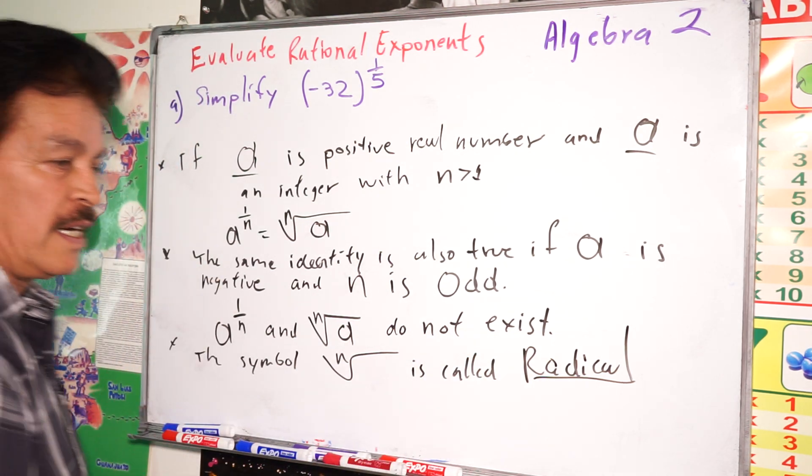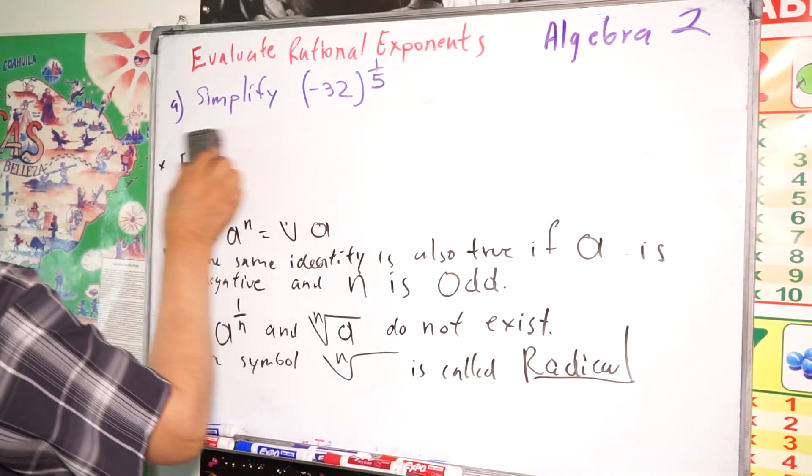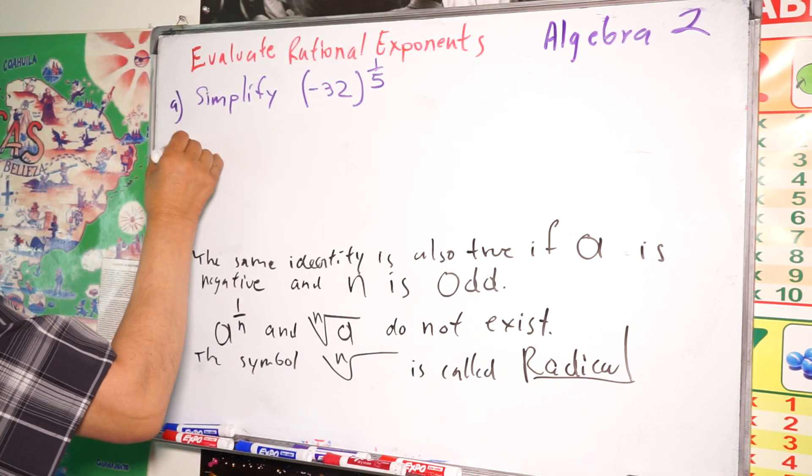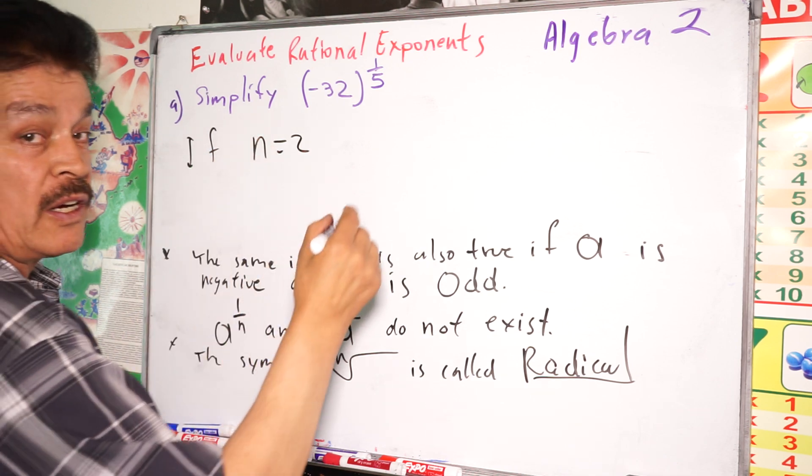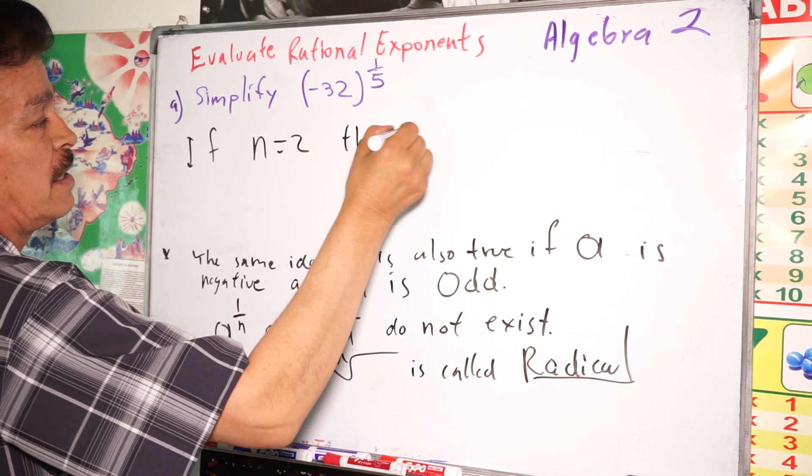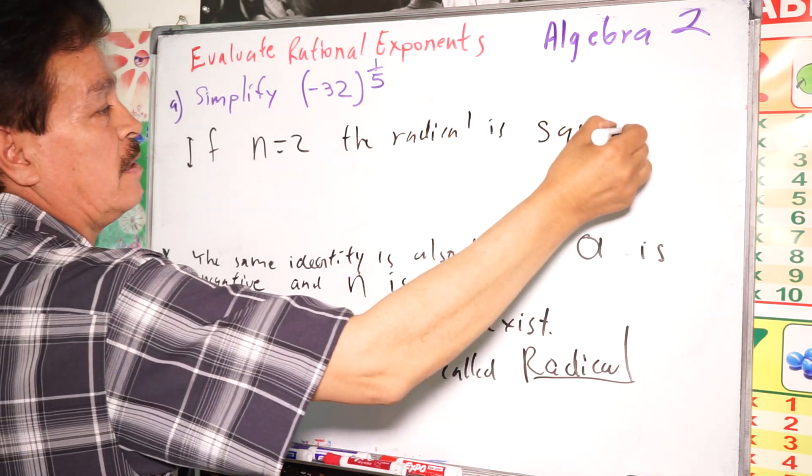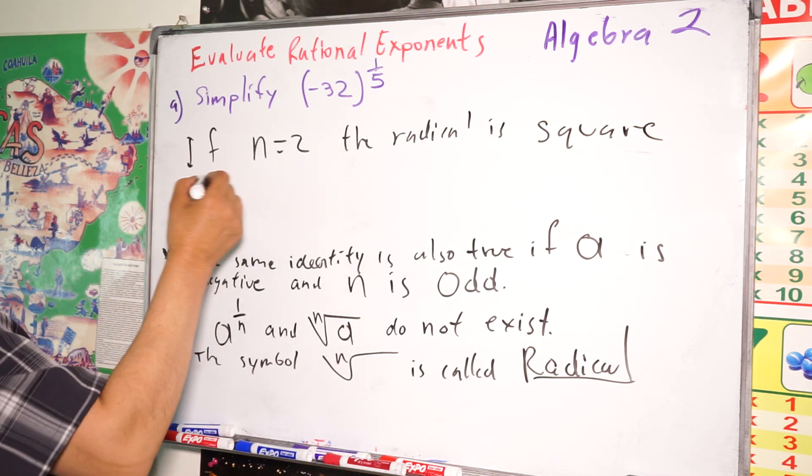Another idea when we are working in this class: if n equals 2, the radical is square, is square.